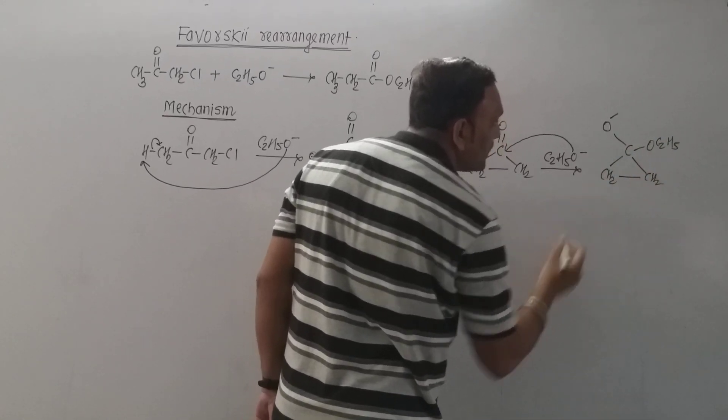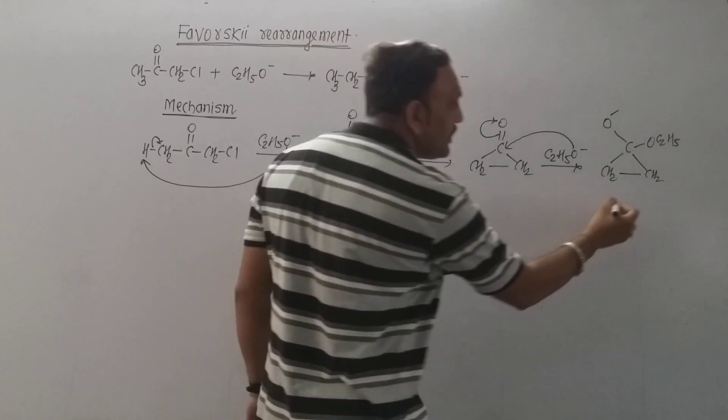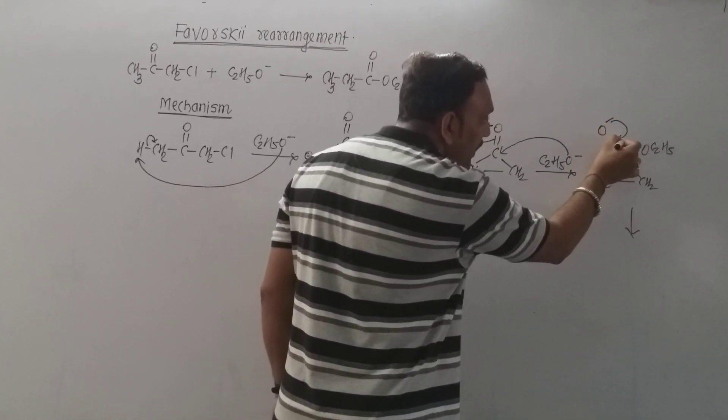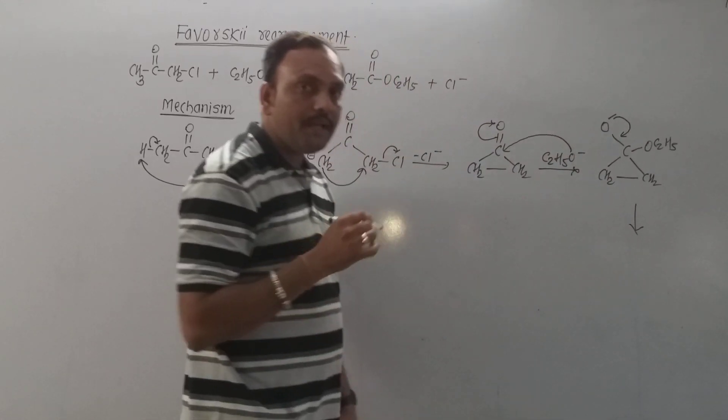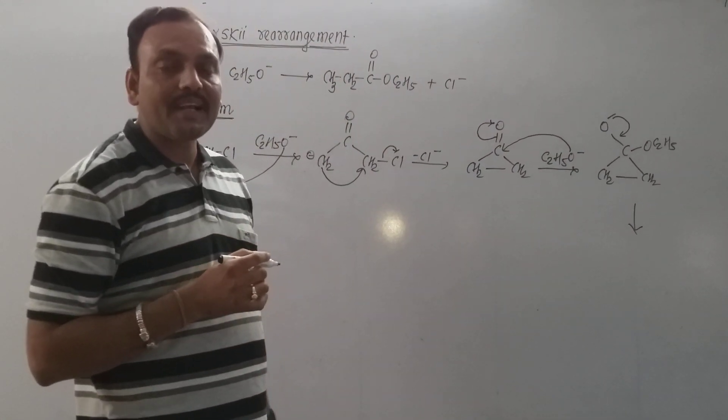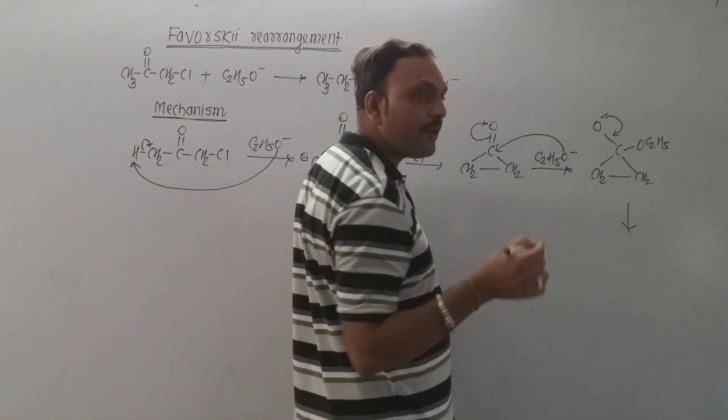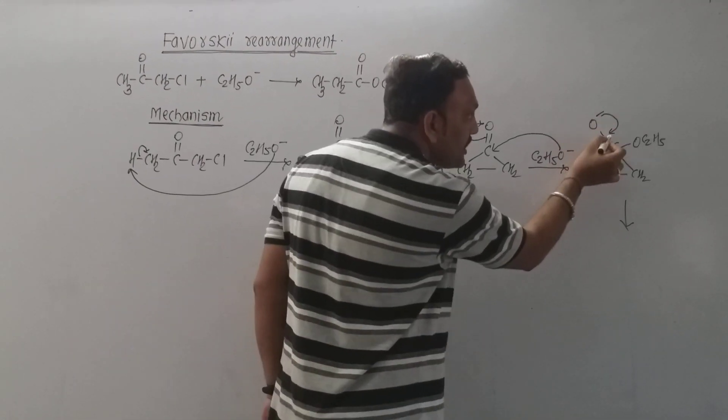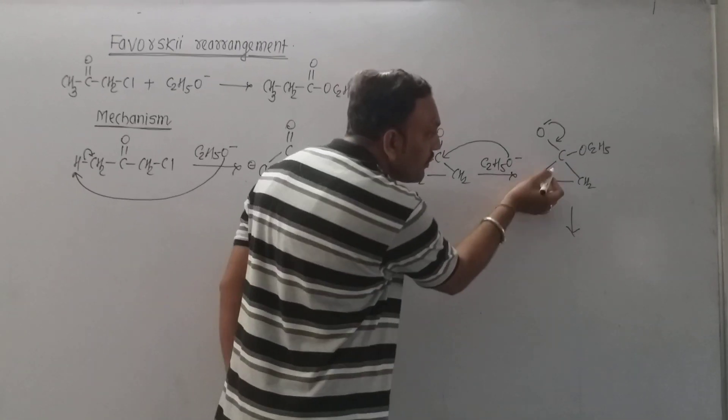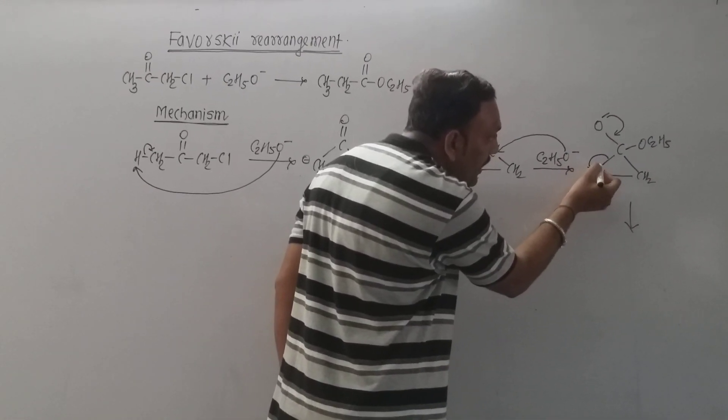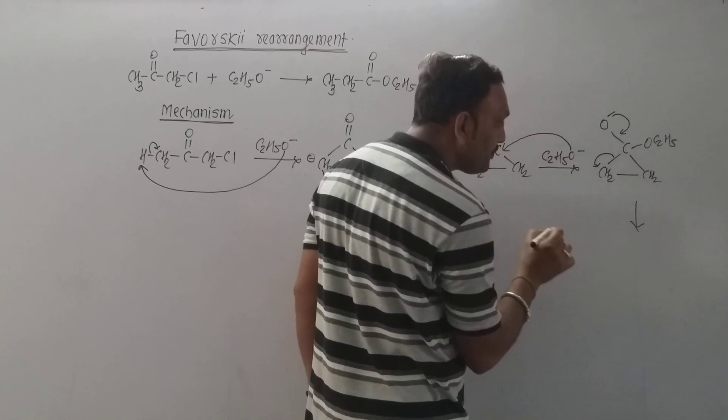At this point, this oxygen keeps electron pair right here. We all know very well if charge is stagnant over one of the atoms then that destabilizes the species. So in order to get stable, oxygen shares electron pair. This carbon keeps electron pair of this bond like this.